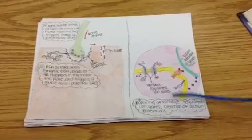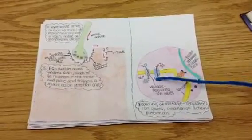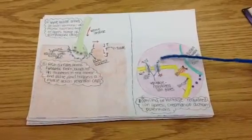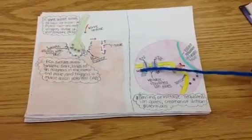Over here we have the opening of the voltage-regulated ion gates. It creates an action potential, potassium and sodium.